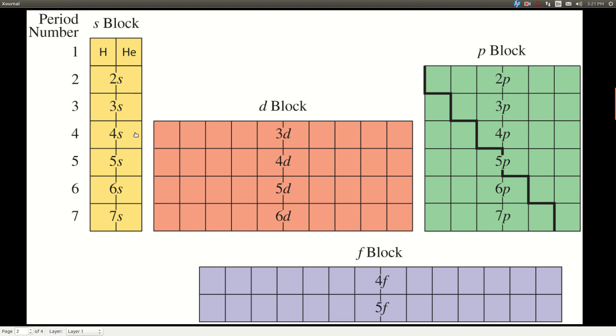Every element that's in the second column ends in S2. Helium ends in, well, is 1S2. Beryllium ends in 2S2, magnesium ends in 3S2, calcium in 4S2, strontium in 5S2, and so on.